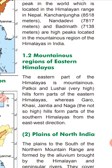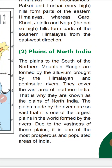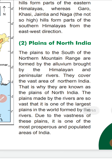The eastern part of the Himalayas is mountainous. The Patkai and Lushai hills are the highest in the Eastern Himalayas, where the Garo, Khasi, Jaintia, and Naga hills form in the east-west directions. The Plains of North India lie to the south of the northern mountain range, formed by alluvium brought by Himalayan and peninsular rivers, covering a vast area of northern India.